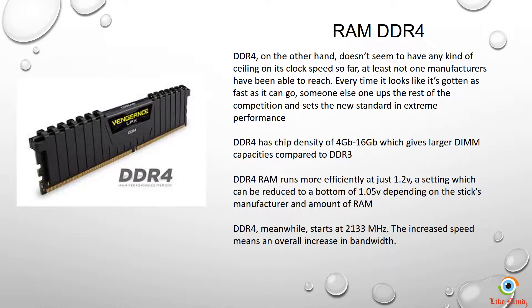The best part of DDR4 is that it has no clock speed ceiling — not even manufacturers have been able to define a maximum that DDR4 can achieve. DDR4 also has a chip density of 4 GB to 16 GB, which gives larger DIMM capacities compared to DDR3.